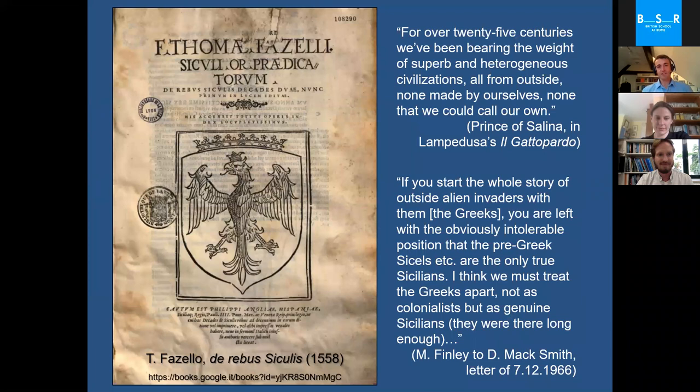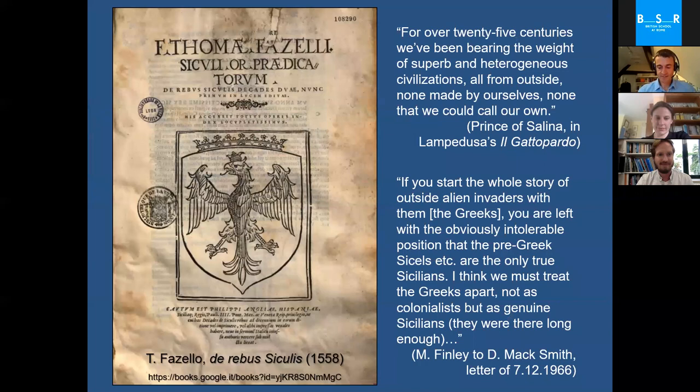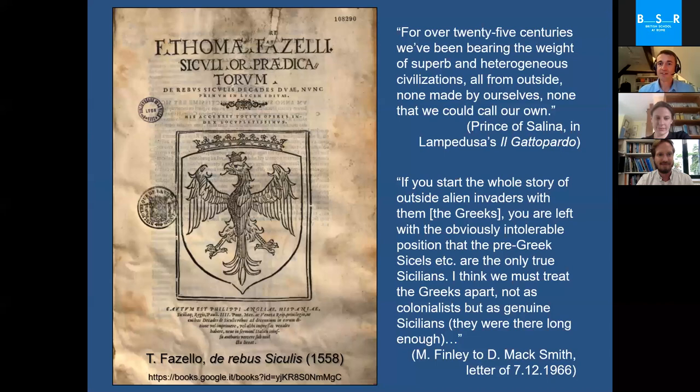The historiographic problem is how we approach a history of ancient Sicily. A history which, in modern times, starts with the account of Tommaso Fazello's De Rebus Siculis in 1558, which already set out an account immortally encapsulated in the words of the Prince of Salina in Lampedusa's Gattopardo: 'For over 25 centuries we've been bearing the weight of superb and heterogeneous civilizations, all from outside, none made by ourselves, none that we could call our own.'